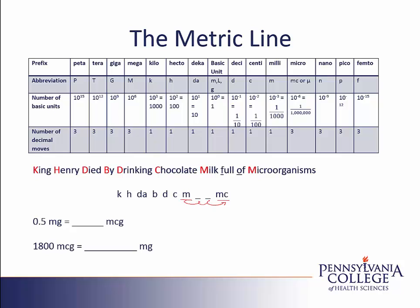This three-jump on the metric line represents three jumps of my decimal. The decimal goes between the digits, so I have my decimal here. I'm going to move the same number of jumps in the same direction as my metric line — one, two, three jumps. I need to fill in placeholder zeros. So my decimal moves from between the zero and five to the end, and I have 500 micrograms.